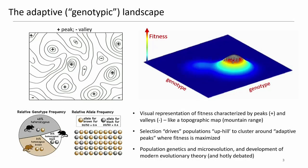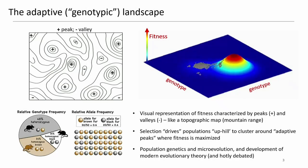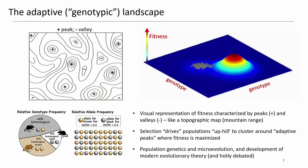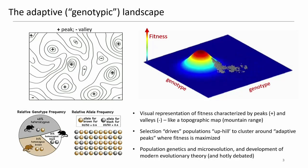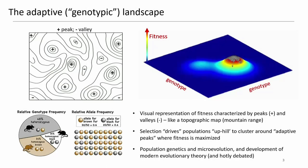The adaptive landscape — what is it? The concept came about in the early 20th century with the works of Wright and others, primarily applied to the genotype and to allele frequencies throughout populations. Essentially, the adaptive landscape is a visual representation of fitness, characterized by fitness peaks and fitness valleys, very similar to what you would see in a topographic map. The theory is that selection drives populations uphill to cluster around adaptive peaks where fitness is maximized, and over evolutionary time these fitness peaks may move around.